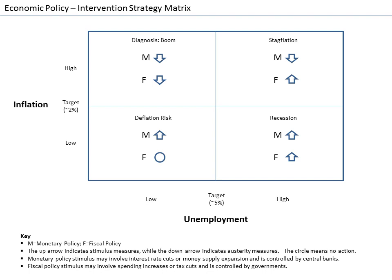Fiscal policy is the use of government's revenue and expenditure as instruments to influence the economy. Examples of such tools are expenditure, taxes, and debt. For example, if the economy is producing less than potential output, government spending can be used to employ idle resources and boost output. Government spending does not have to make up for the entire output gap.